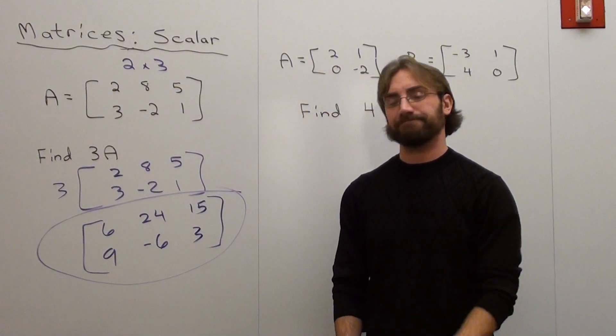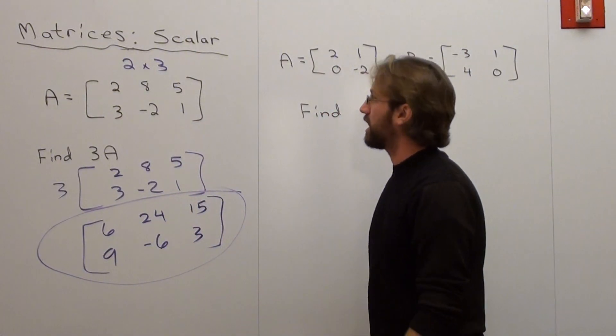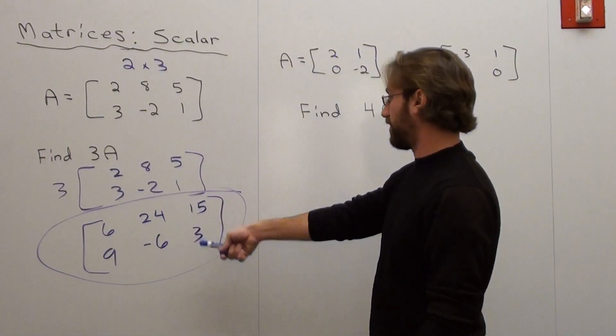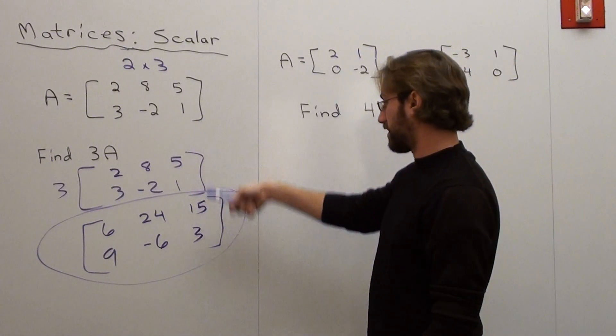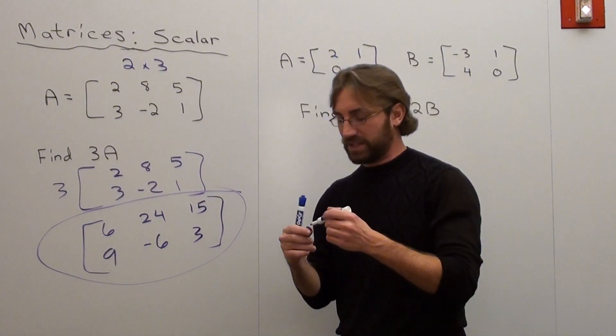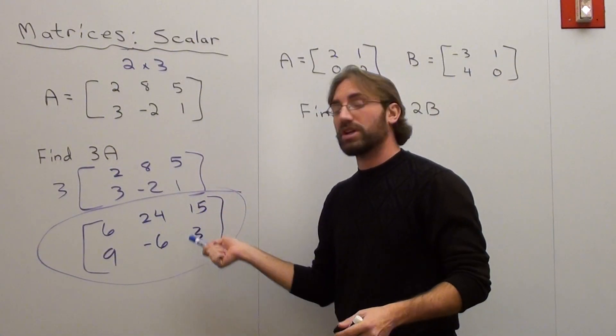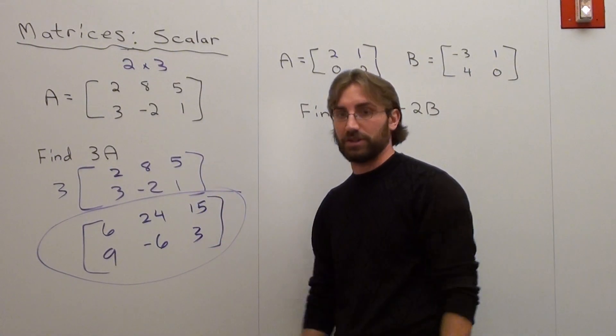Right there. That's all you do. I should probably check to make sure that I got it right. 6, 24, 15, yuck. 9, negative 6, 3. Finito. That's it. That's your new answer. It's still a 2 by 3 matrix, except it had a 3 multiplied in every term.